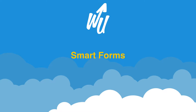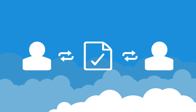This brief explainer video will take you through the key aspects of using a smart form in WriteUp. The smart form's functionality provides clinicians with the ability to send forms to a patient, a next of kin, or a third party that can be self-completed. The form is then automatically saved to the patient's record once it has been completed.